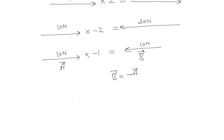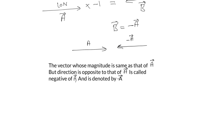Notes: If you have a vector A and another vector with the same magnitude as A but in the opposite direction, that vector is called the negative of A. The vector whose magnitude is the same as A but whose direction is opposite to A is called the negative of A and is denoted by minus A.